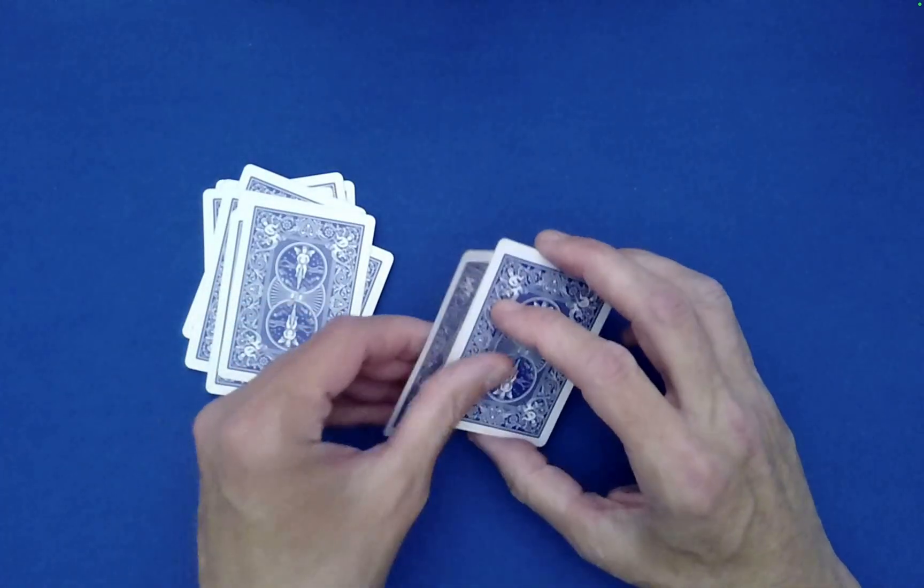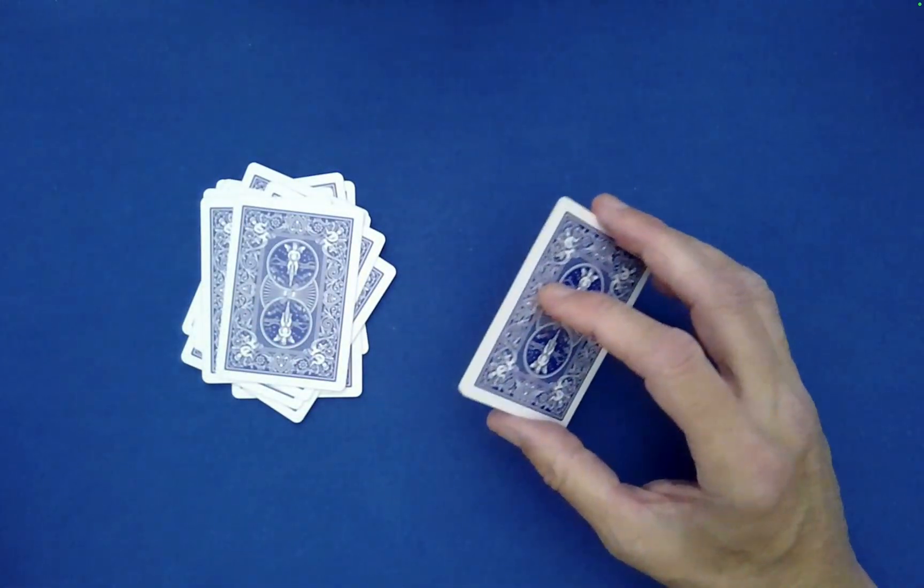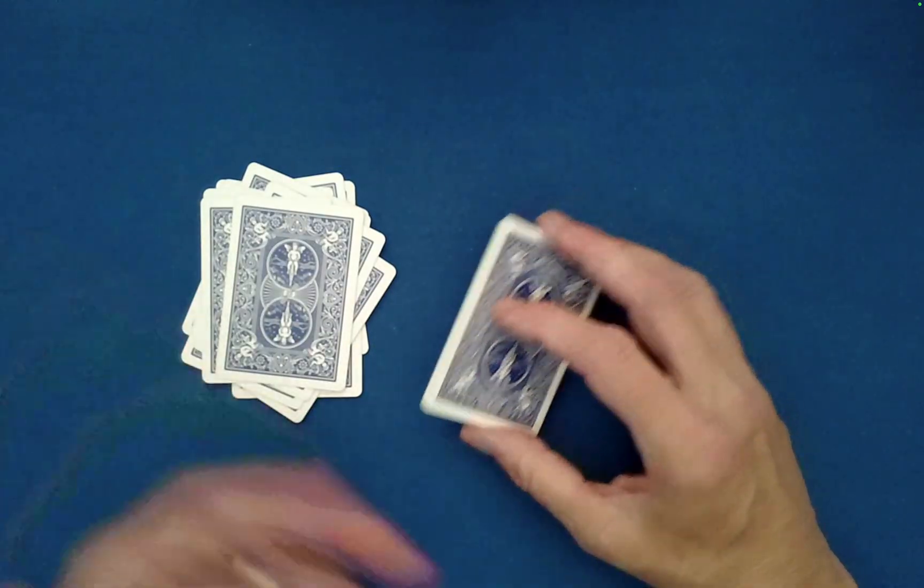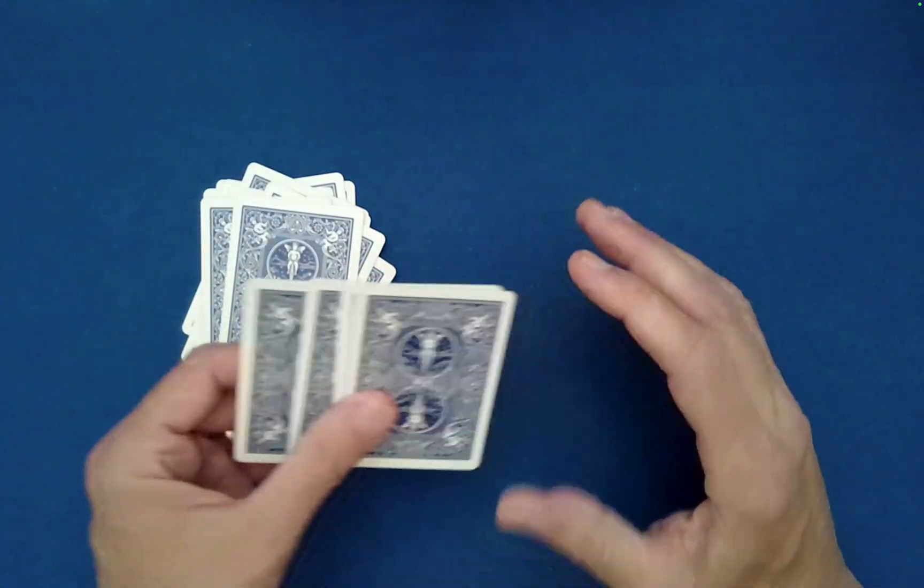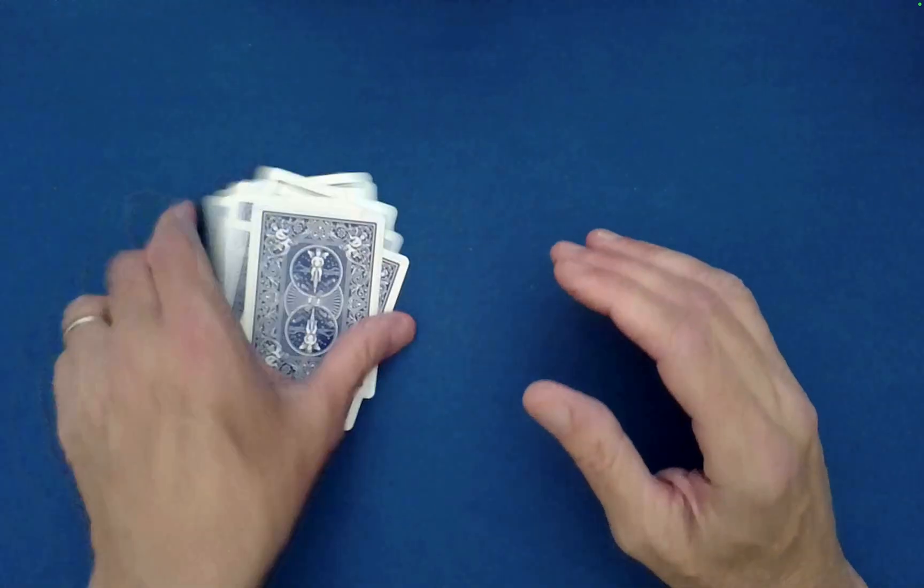This one's called the Klondike. This is where you take the top and bottom off as one like this. Now this is kind of a long-winded shuffle so we can keep doing that or stop wherever you'd like. Stop there, don't do any more. Okay that's just fine.